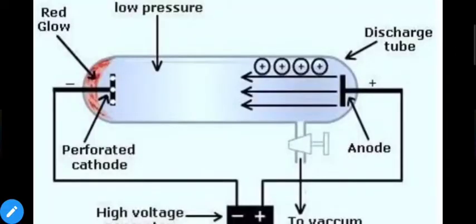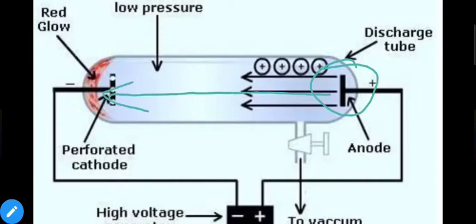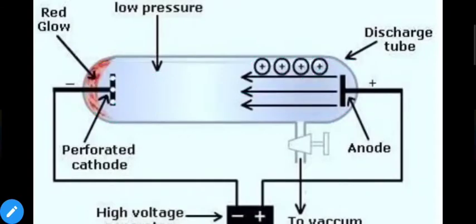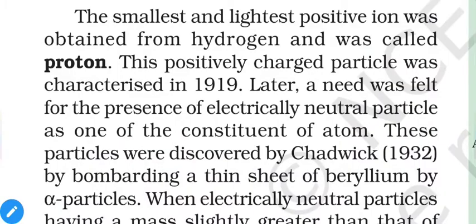This is the simplified version of the production of canal rays. As we can see in the image, the opposite situation is observed — particles are produced from the anode side and move towards the cathode side. If we poke holes in the cathode plate and cover the back side with fluorescent or phosphorescent material, these particles collide with it and cause it to glow, confirming their production.